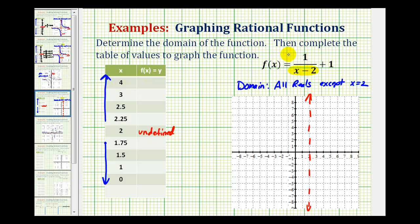So when x is equal to four, notice how the denominator would be two. So we'd have one-half plus one, which would be one-and-a-half or 1.5.